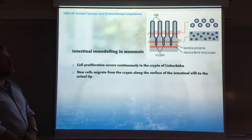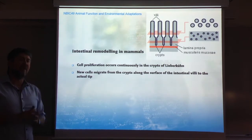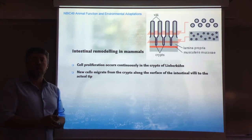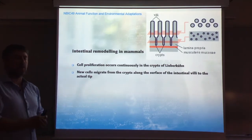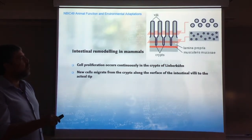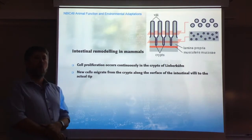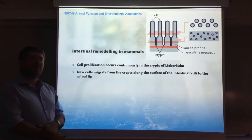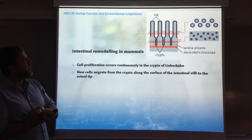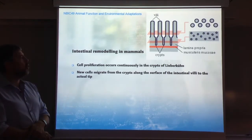First of all, we need to revise a little bit of relevant aspects of gastrointestinal or intestinal morphology, to understand the topic of intestinal remodeling. I'm going to be talking about mammals. This is a cartoon-like picture of what the microstructure of the gastrointestinal lining of the intestine looks like. The formation of villi that increases the surface for reabsorption of nutrients in the intestine is an important element.